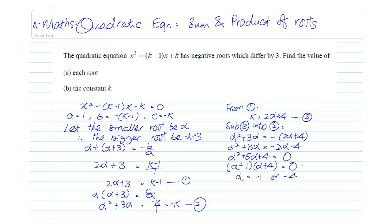So, we have found out two values of alpha. One will be negative 1. The other one will be negative 4.